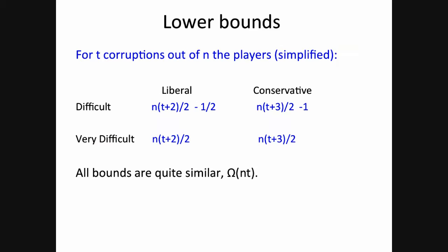Here are the results, for T corruptions out of N players. All bounds are asymptotically Ω(N·T) but with small differences. Going from difficult to very difficult functions doesn't make much difference — about half an expected message in the liberal case and one message in the conservative case. Going from liberal to conservative counting makes a bit more difference, essentially N/2 messages, but not very much overall.